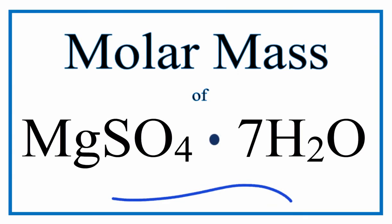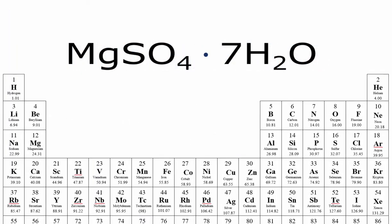To find the molar mass of this hydrate, magnesium sulfate heptahydrate, we first need to figure out the atomic masses for each of the elements.